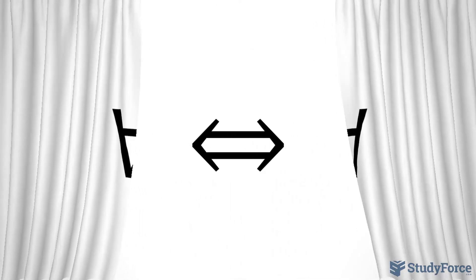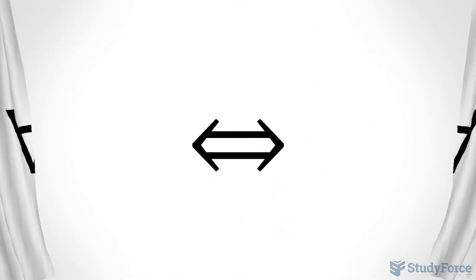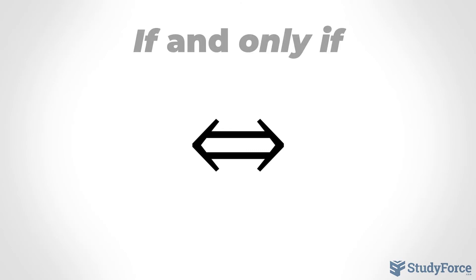Number 8 on the list is this equal sign with two arrows. This symbol is used in mathematical proofs to represent if and only if. When two statements are connected, we use this symbol to show that either both statements are true or both are false.